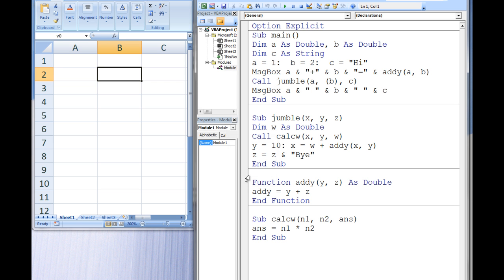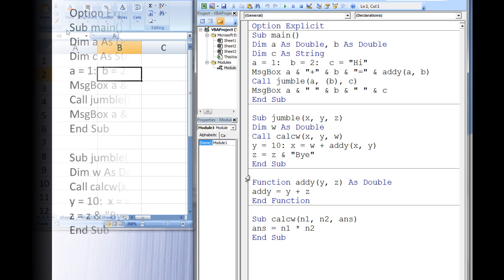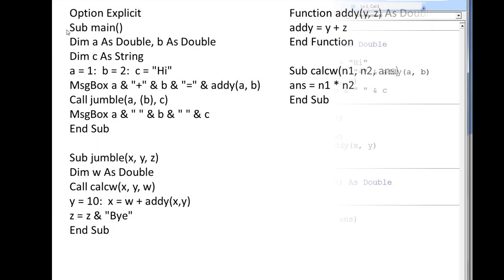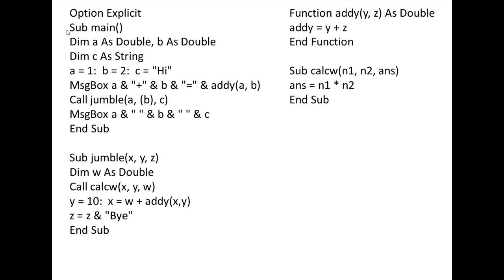Let's discuss why these values appear in the message boxes. As your programs become more complicated, it is often helpful to write down the values of the variables in each procedure so you don't have to keep track of all that information in your head.